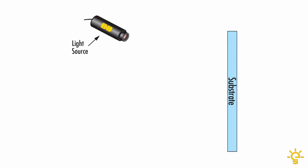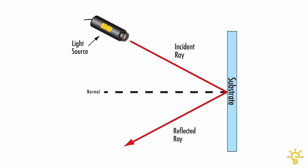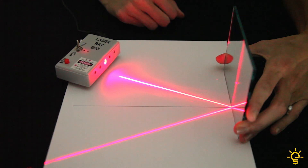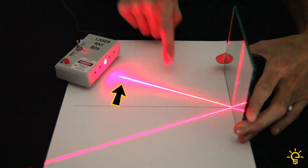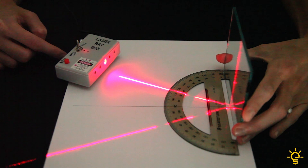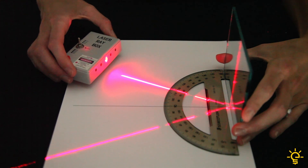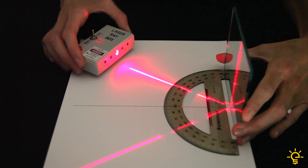Now that we know about the incident ray and the reflected ray, let's talk about the angle of incidence and the angle of reflection. In physics, scientists and engineers use an imaginary line called the normal. The normal is an invisible line that is perpendicular to a surface — in this case, a mirror. The angle of incidence is the angle between the incident ray and the normal. The angle of reflection is the angle between the reflected ray and the normal. By putting a protractor against the mirror, we can see that the angle of incidence is always equal to the angle of reflection. This is called the law of reflection.